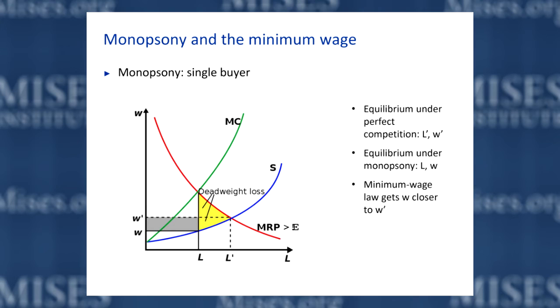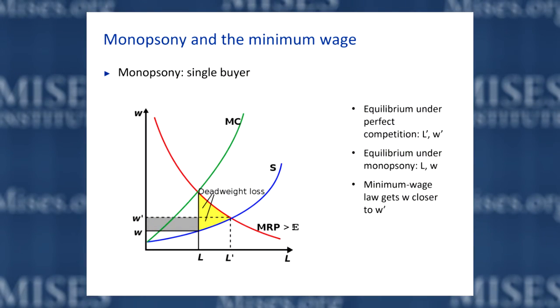The argument coming out in just the last few years that supposedly justifies minimum wage laws is that, just like we have monopoly in the real world, in the real world we have monopsony labor markets where employers have market power, allowing them to pay wages lower than the competitive equilibrium wage W prime. Therefore we need minimum wage laws to get the actual wage in the market closer to W prime — the wage in the market is too low because employers have monopsony power, they need to be forced to pay higher wages, just as monopoly firms need to be forced to charge lower prices for their outputs.